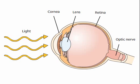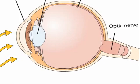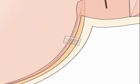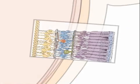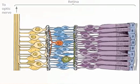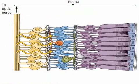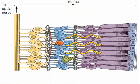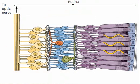Photosensitivity in animals depends on a family of pigments called rhodopsins. In the human eye, light must travel through several layers of neural cells before it can be absorbed by the rhodopsin in rods and cones.